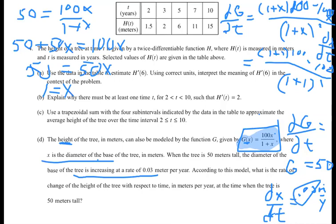If you multiply that by 0.03, if you multiply all that out by hand, you would end up getting 3 fourths. So what that means is the rate of change of the height of the tree is 3 fourths meters per year. So that's the end of that problem.